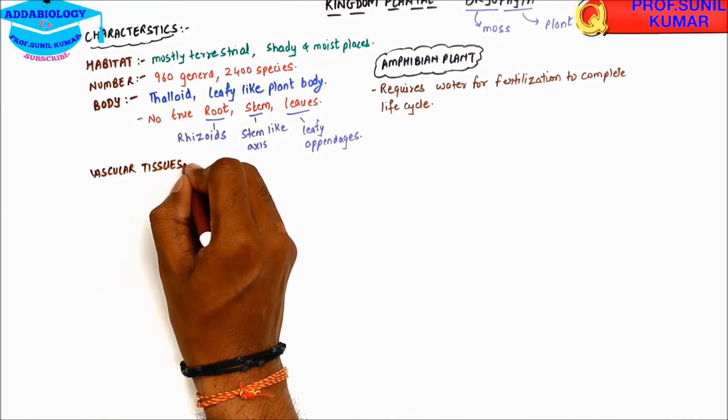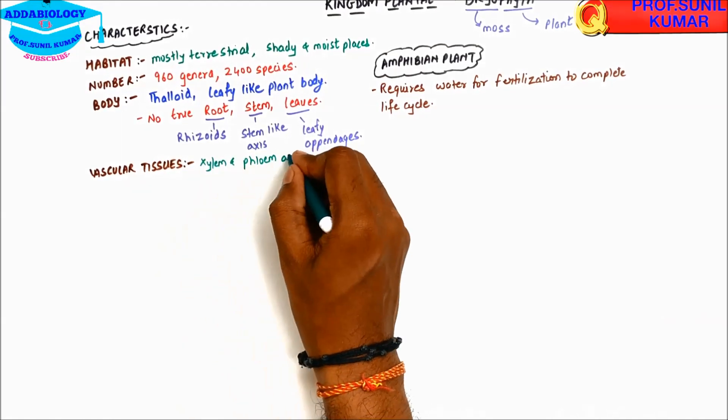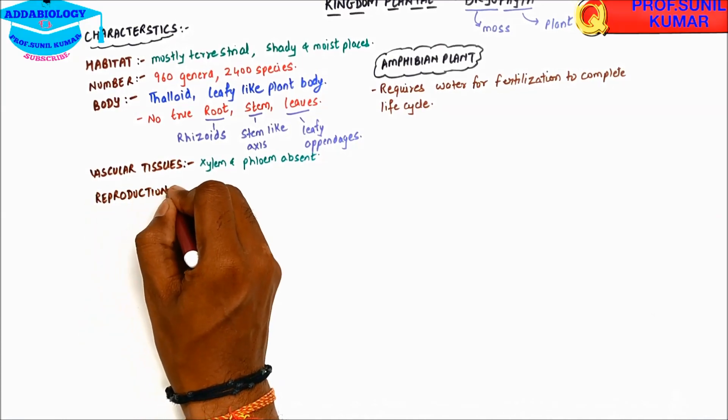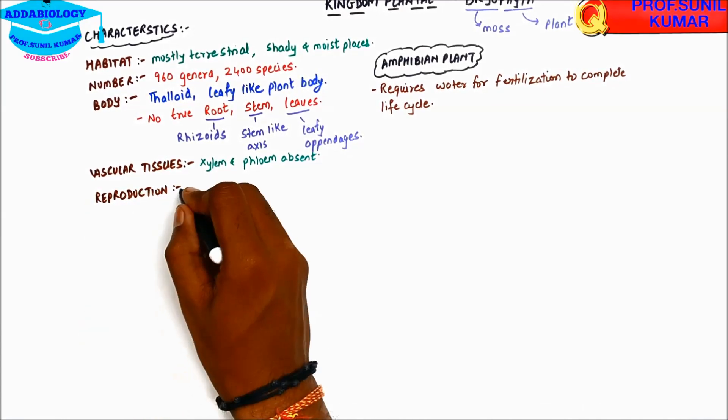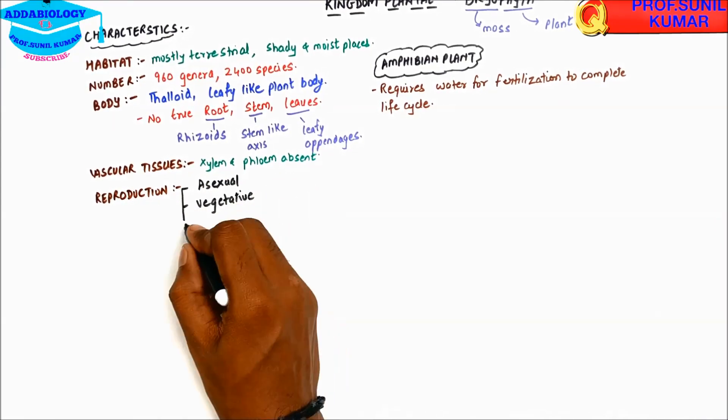When we talk about vascular tissues, in bryophytes xylem and phloem are absent. When we talk about reproduction, the bryophytes reproduce in three different ways: asexual reproduction, vegetative reproduction, and sexual reproduction.